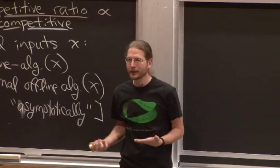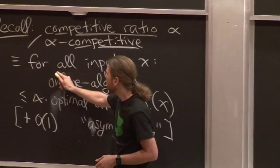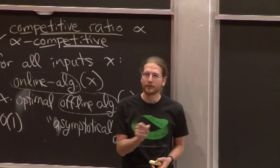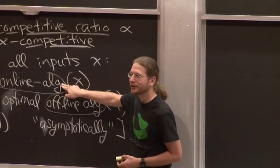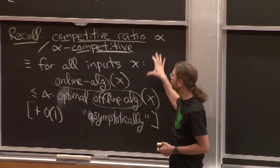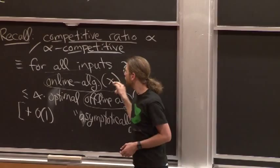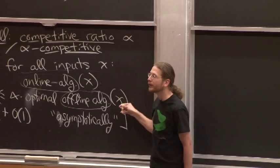The idea of online algorithms is that the input comes one piece at a time, and an online algorithm only sees one piece and has to make a decision right then and there. Whereas an offline algorithm gets to know the whole input ahead of time and makes decisions with knowledge of the future. Our goal is to get a good competitive ratio, where for all inputs, the online algorithm's performance is within a factor of alpha of the optimal offline algorithm.